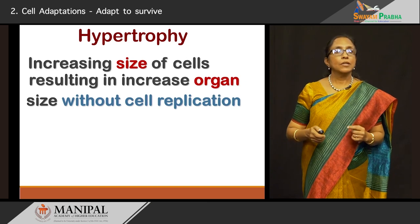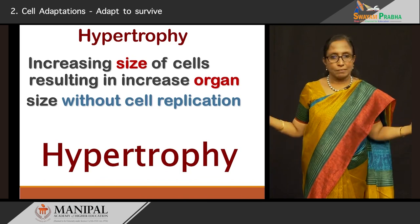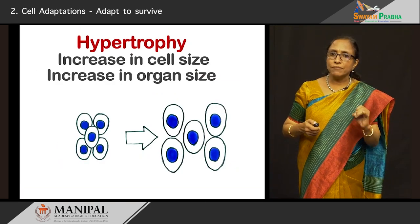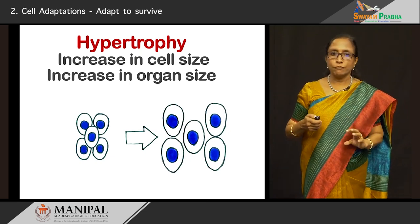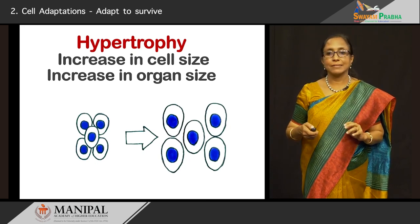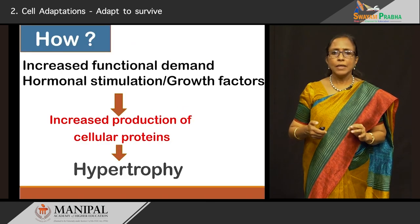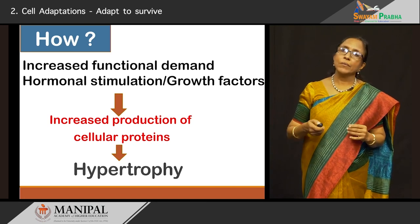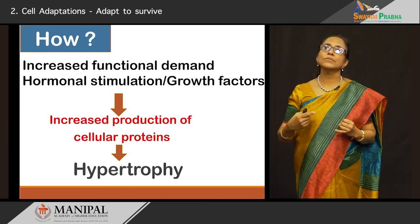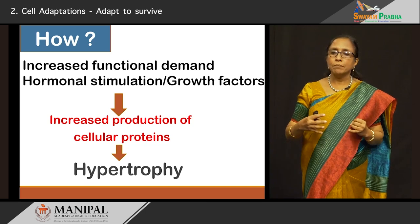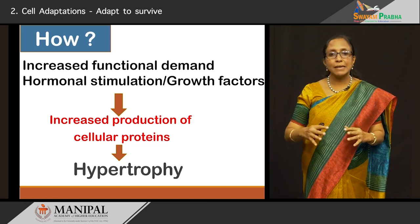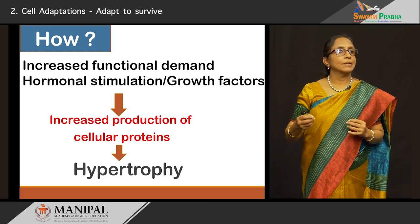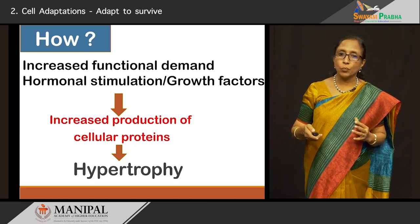One important thing is that in hypertrophy there is no cell replication — the size increases but the number remains the same. How does this happen? There can be various situations of increased functional demand, stimulation by hormones, or growth factors coming into the picture. All of them can cause an increased demand on the cells or tissue, which makes the cells increase in size. The size increase is mainly by increased production of the cellular components — the cellular proteins in the cell. That makes the cell big, and that is how we get hypertrophy. When the cell becomes big, the cytoplasmic components become big, and the nucleus may also show increased nuclear material.